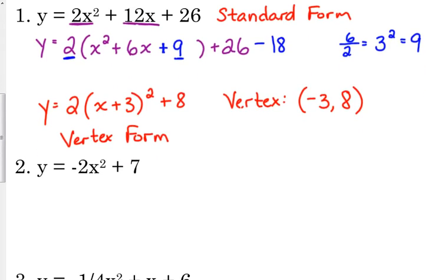Let's look at another one. Negative 2x² + 7. Negative 2x² + 7. Now this one is a little tricky because notice we don't have that x term. So we don't have anything to complete the square with.